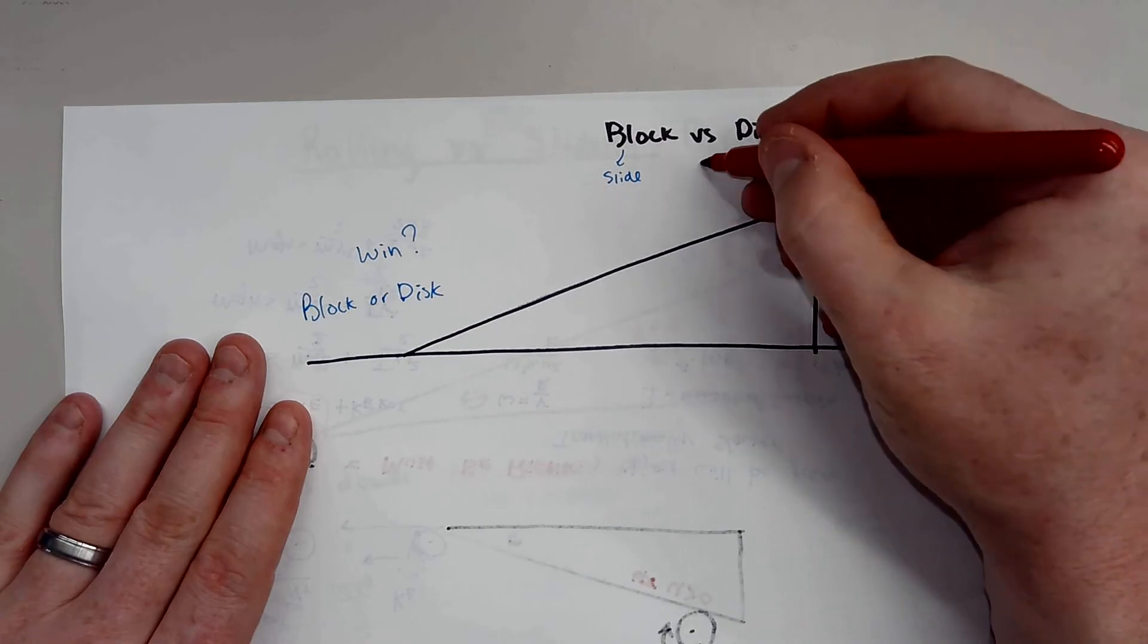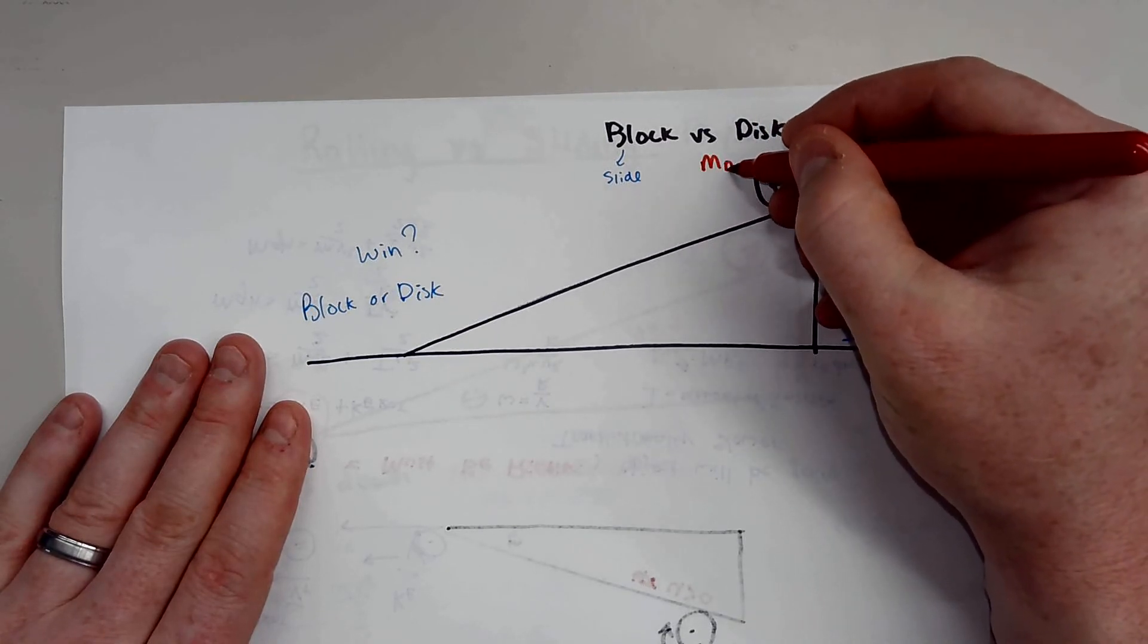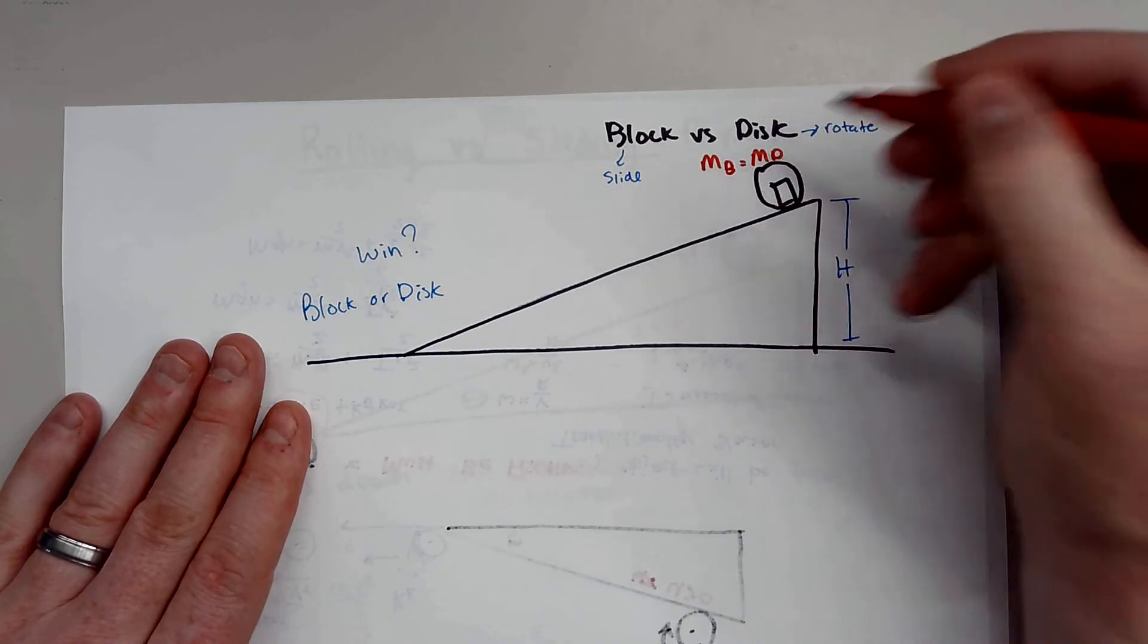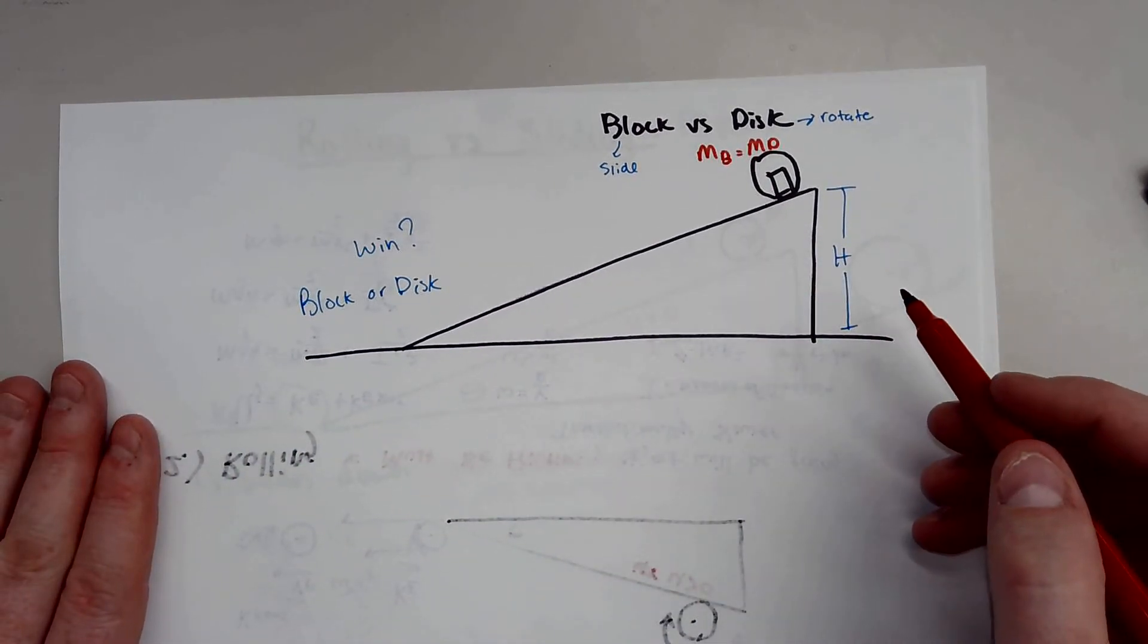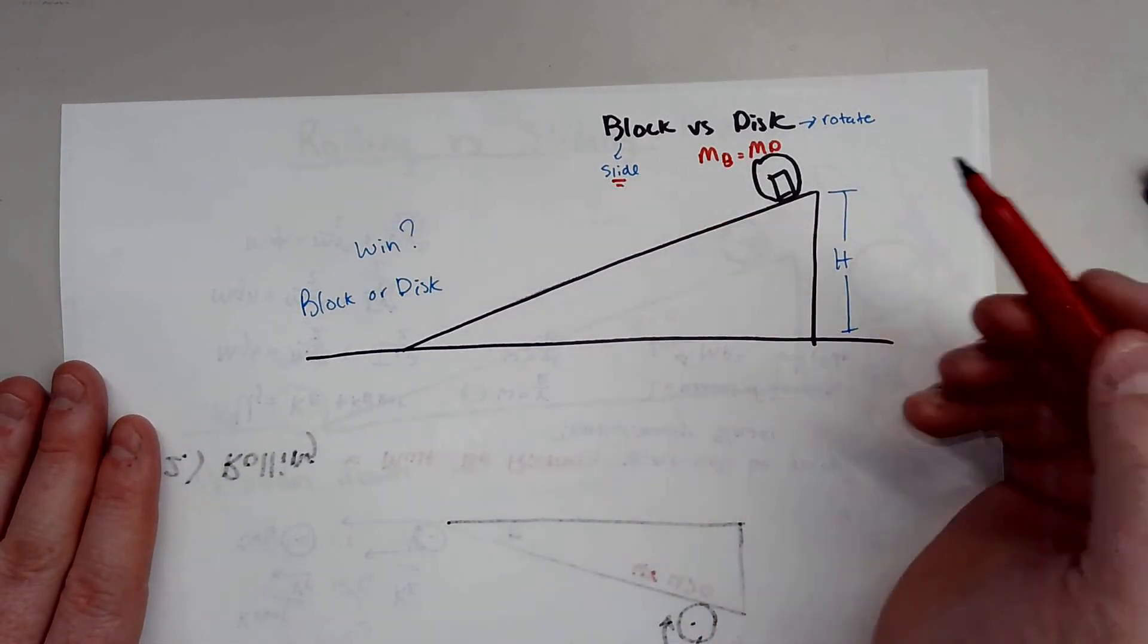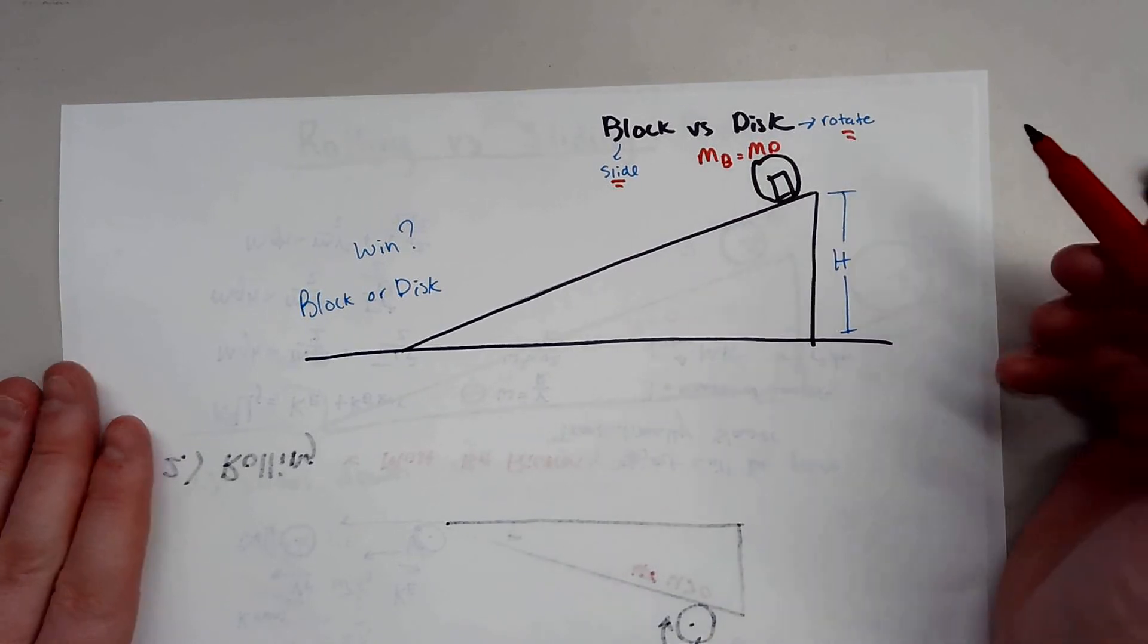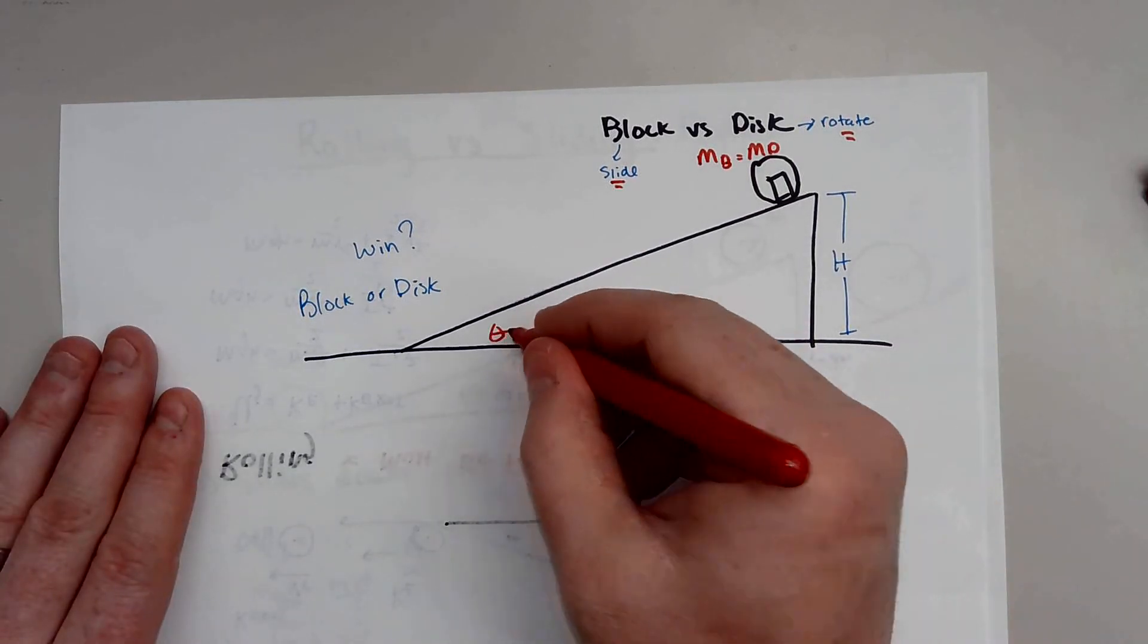So the mass of the block is equal to the mass of the disk. And they start off at the exact same height. Remember, the block is going to slide. And the disk will rotate. And they'll say, which one will hit the ground first and why?